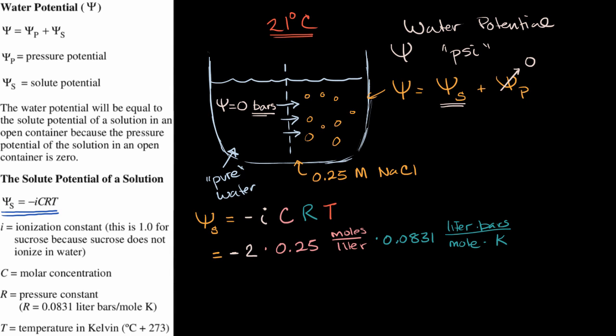And then we are going to multiply that times the temperature in kelvin. Now, what's that going to be? Well, it's going to be our temperature in Celsius plus 273, so 21 plus 273, you're going to get 294 kelvin.